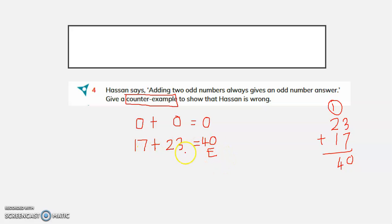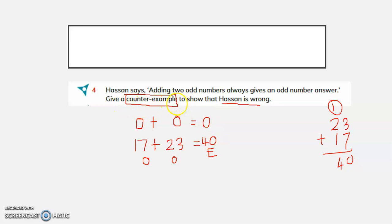Adding two odd numbers gives an even result, which shows Hassan is wrong. A counter example is an example that shows that a statement is wrong. Odd plus odd equals even — that is the counter example here.